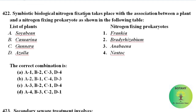Symbiotic biological nitrogen fixation takes place with the association between a plant and a nitrogen-fixing prokaryote. In soybean, Bradyrhizobium is the nitrogen-fixing prokaryote. In Casuarina, Frankia is the nitrogen-fixing prokaryote. In Gunnera, Nostoc is present. In Azolla, Anabaena acts as the nitrogen-fixing prokaryote. So option B is correct.